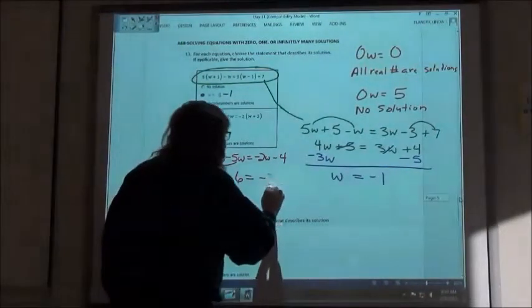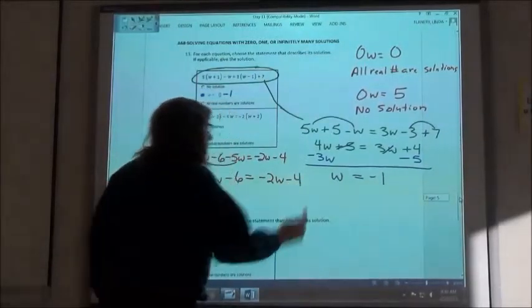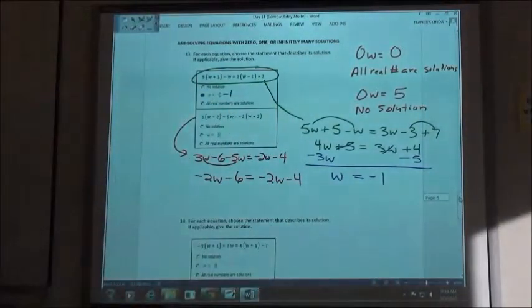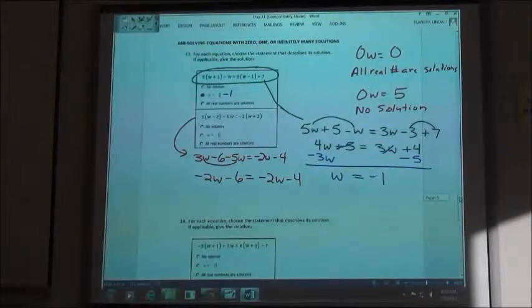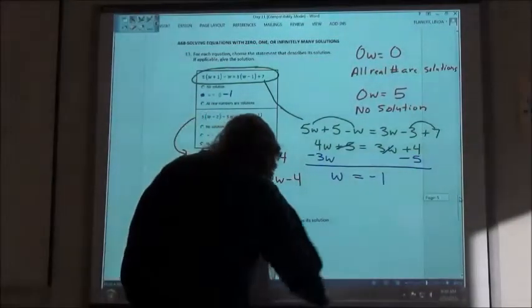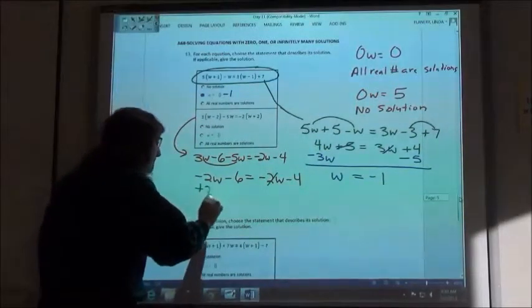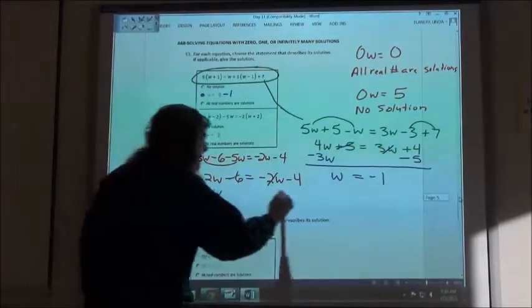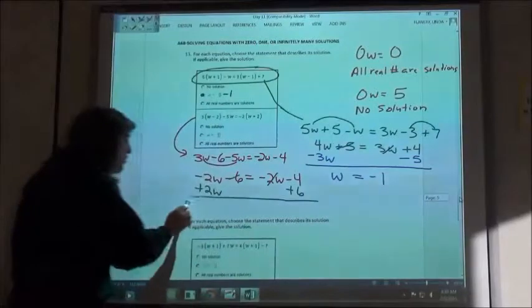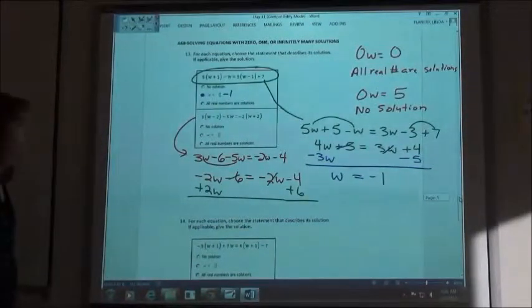Equals negative 2w minus 4, right? Okay. Yeah. Okay. So if we're going to solve that. So your 2w comes over to positive 2w. Your 6 becomes a positive 6. And so when we subtract, we get?